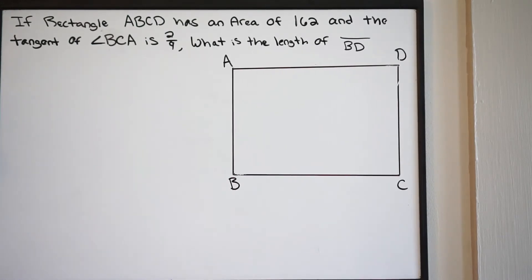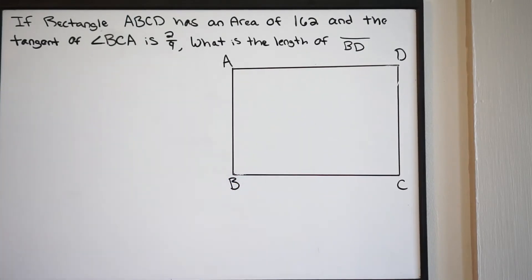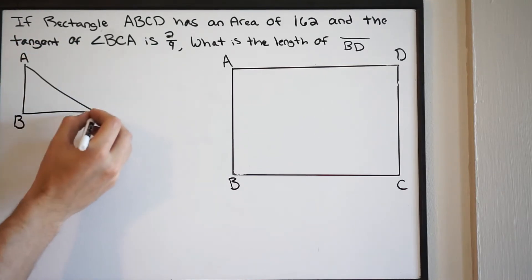What we want to do first is take a look at this tangent. It says angle BCA. If we look at a rectangle here, angle BCA is this right here. So what I'm going to do is just draw a little triangle off to the side here so we can get a better view. This is going to be angle BCA. So this is A, this is B, and this is C. Essentially, we are talking about this angle here.